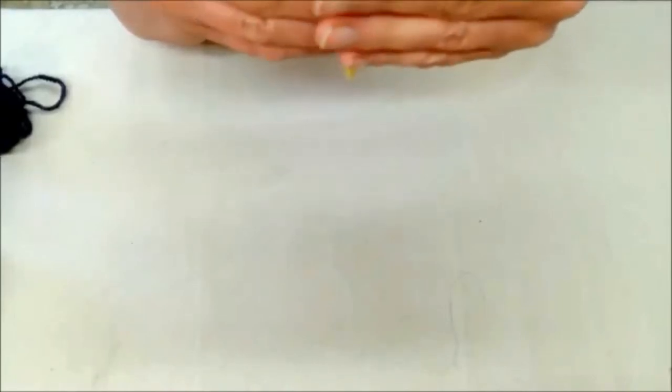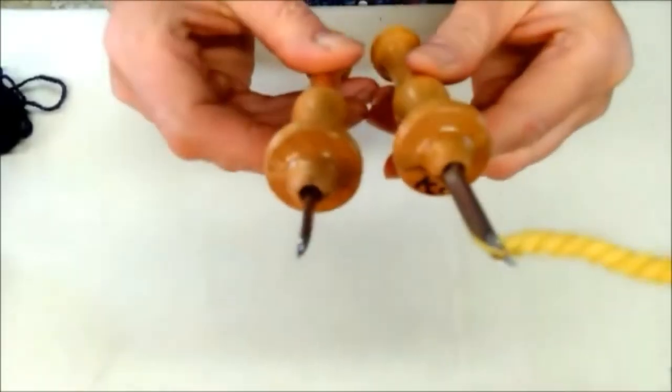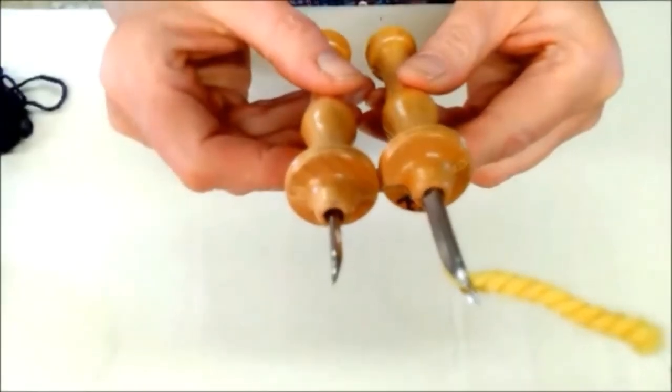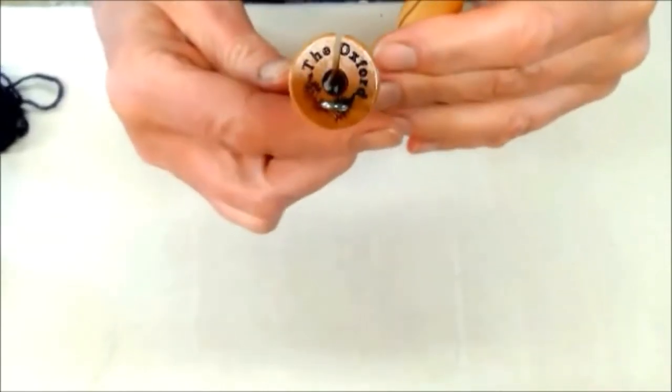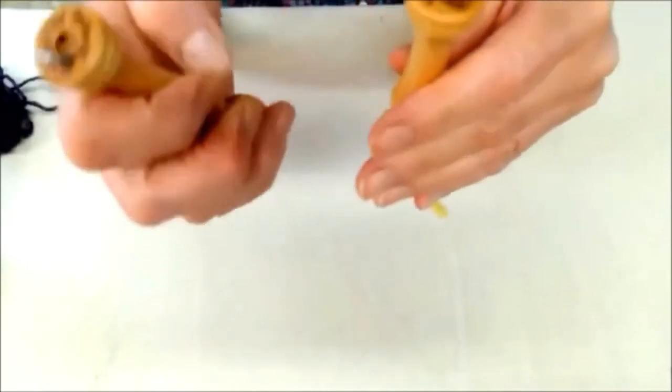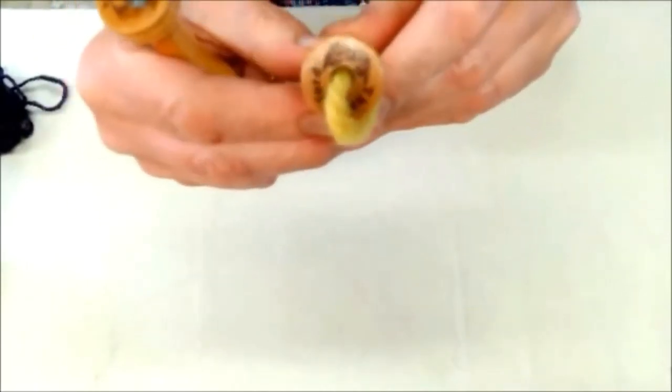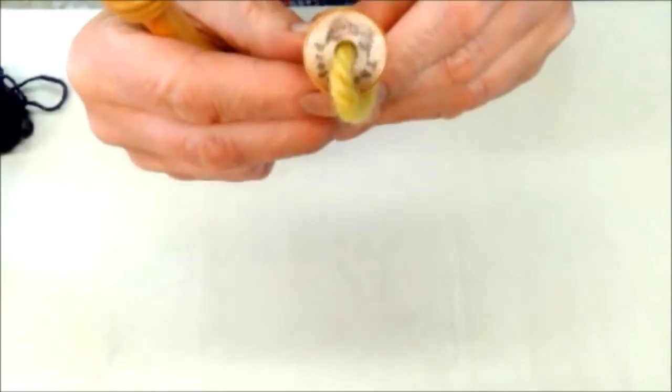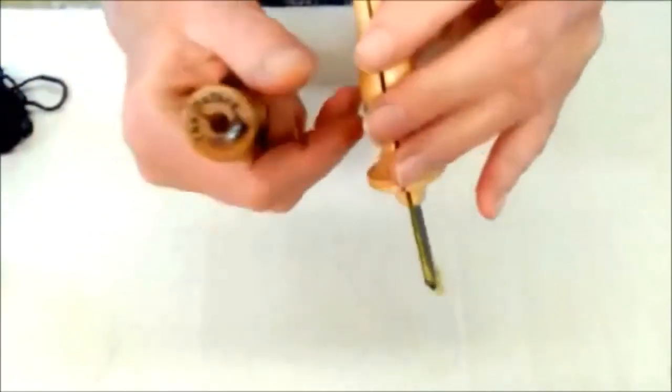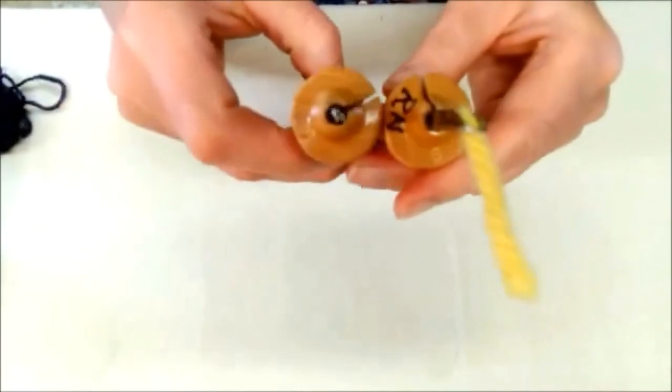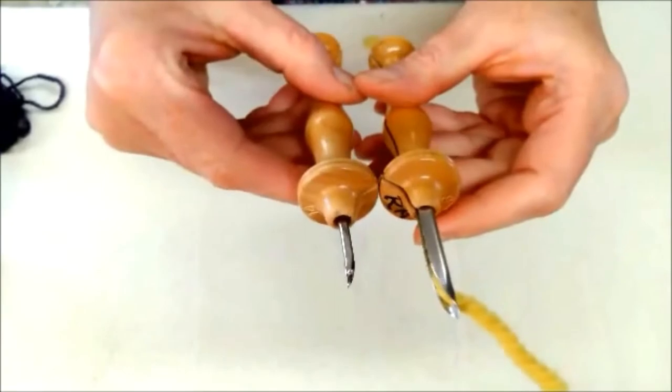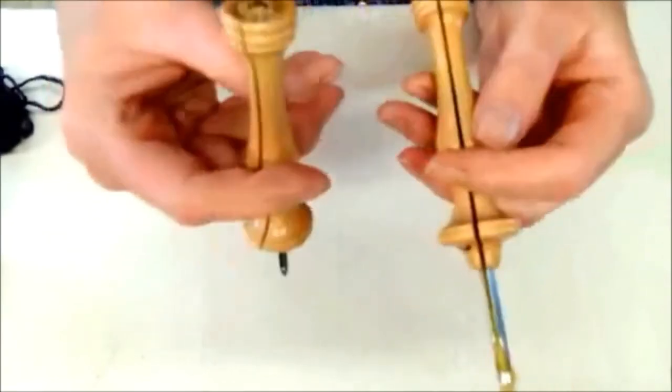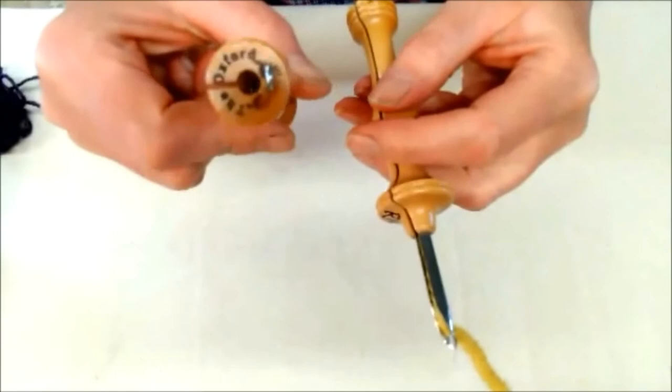Now there are many different brands of rug punching tool. The ones that I use and prefer are the Oxford. You can tell they are bonafide Oxford needles because it says the Oxford and it has a little stamp on it that looks like a little sheaf of wheat. They have become so popular that there are now illegal knockoffs of these rug punches. So when you are purchasing, make sure it has the Oxford stamped on the butt.